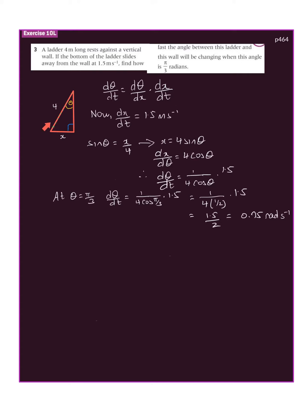We constructed a diagram here. This is the ladder, that's the wall. That's the ladder against the wall, and that's the angle we're interested in. Remember it's defined as the angle between the ladder and the wall.